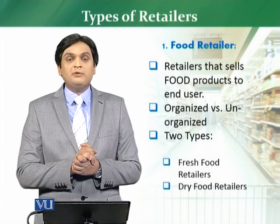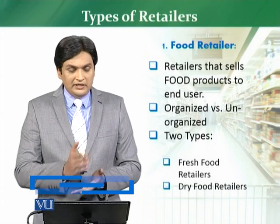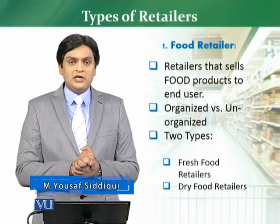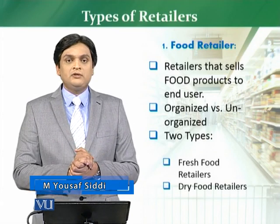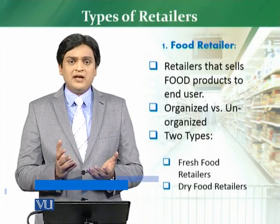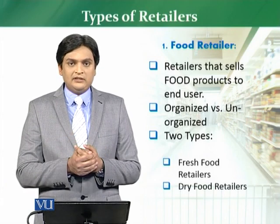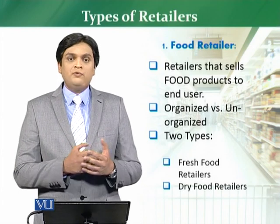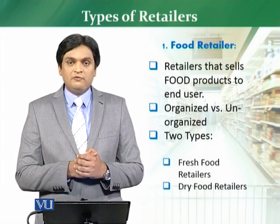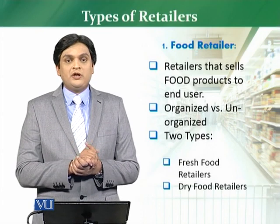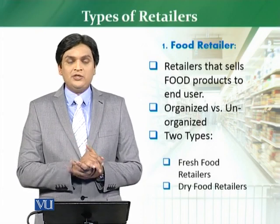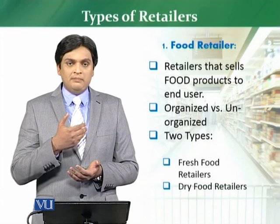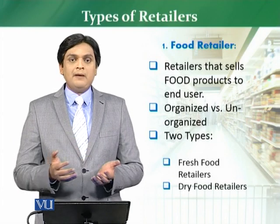First of all, we have a type of retailer called the Food Retailer. A food retailer is a person or a government which is selling food products to customers. Every person or government who is selling food is a food retailer. The food retailer has two types: organized food retailer and unorganized food retailer. We will elaborate on those definitions when we go into its types.